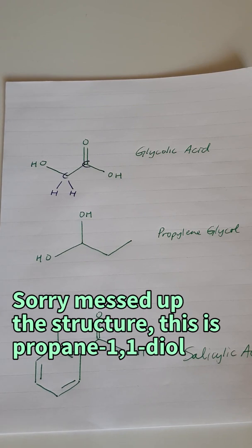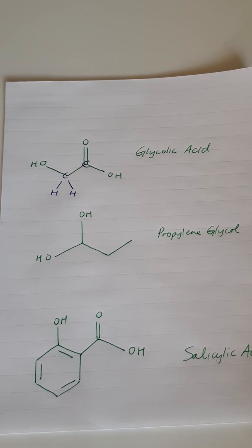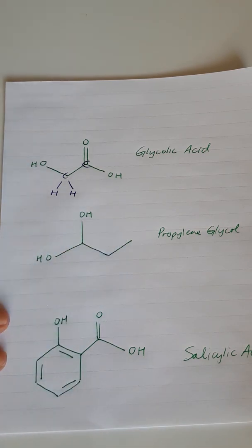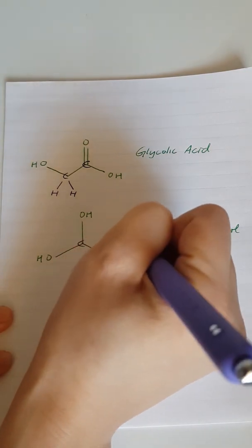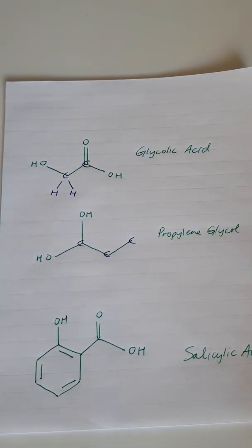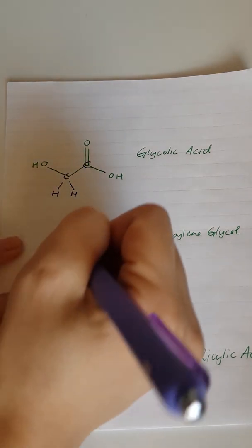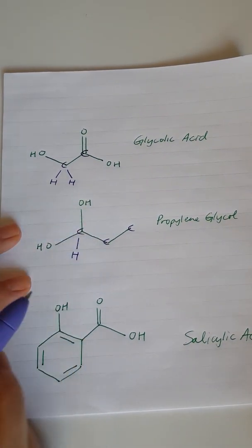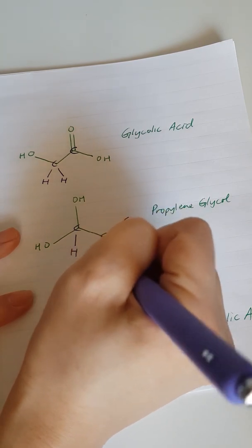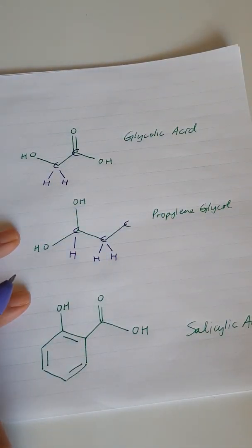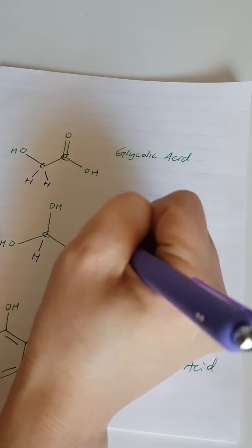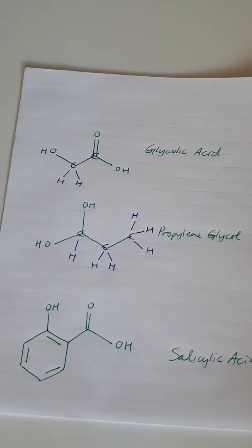Propylene glycol is the next one. This is again shown as a skeletal structure, so if we want to convert it to a regular expanded structure, we would put carbons on each of these corners — we've got these two corners here and the end of a line here, which is also a carbon. Again we have to check that each carbon has four bonds: this carbon on the left has three at the moment so we need to add one more as a hydrogen; we have a carbon here that has two lines so it needs two more; and then we have a carbon over here which only has one so it needs three more. And that's what propylene glycol looks like.